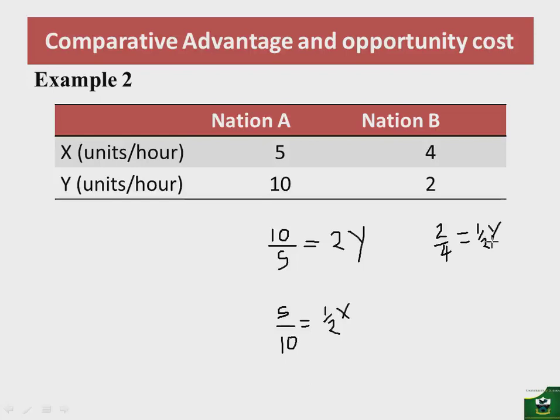So for nation B to produce an additional unit of X, it gives up half a unit of Y. For nation B to produce an additional unit of Y, it must give up some units of X. The foregone is 4 units of X divided by the gain of 2 units of Y, giving us 2X. So for nation B to produce one additional unit of commodity Y, it must give up 2 units of commodity X.